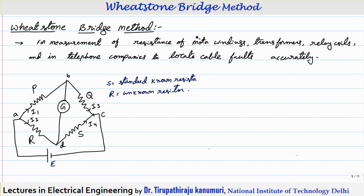That means between 5 ohms up to 1 mega ohm, we can measure with high accuracy. However, if you go to the extreme lower end or higher end of the medium resistance range, some errors will be introduced — the reasons for which we are going to discuss in today's lecture.